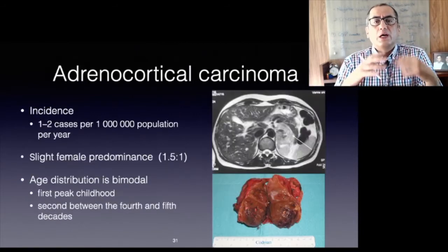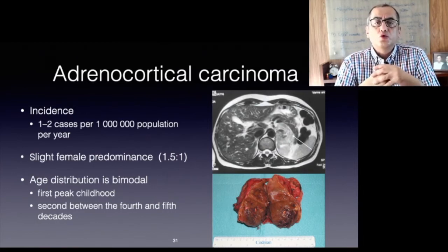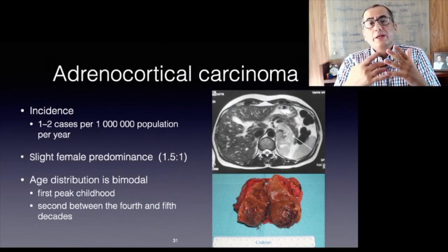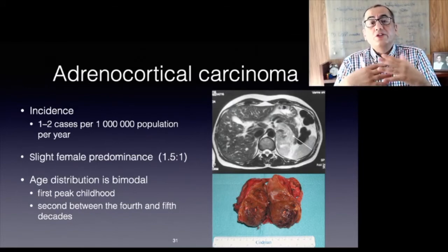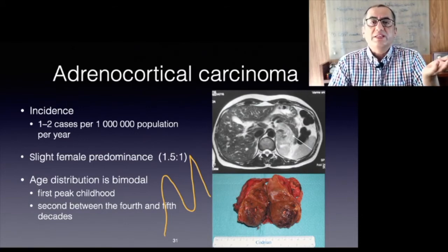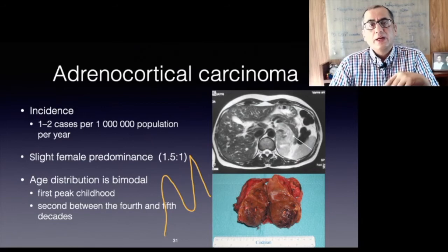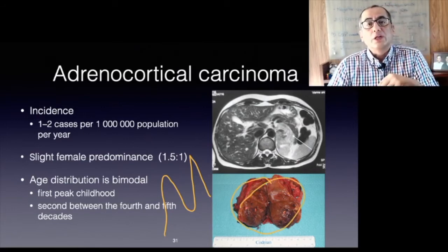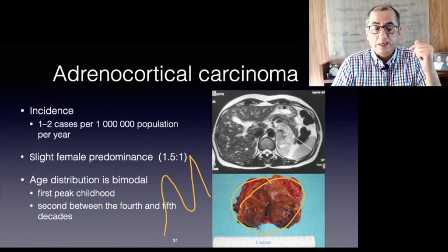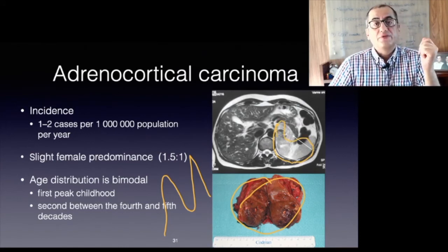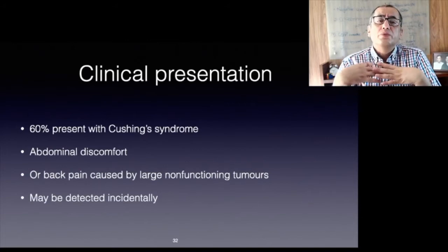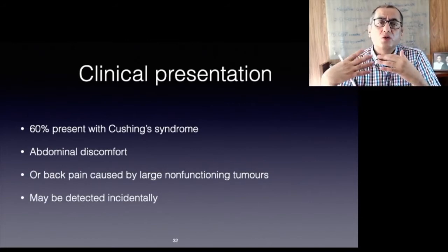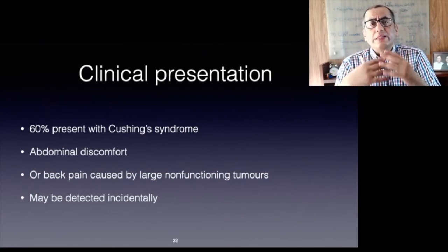Adrenocortical carcinoma is a rare malignancy with an incidence of one to two cases per million population per year and a generally poor prognosis. A slight female predominance of 1.5 to 1 is observed. The age distribution is bimodal — one peak in childhood and a second at the fourth and fifth decades. Approximately 60 percent of patients present with evidence of steroid hormone excess such as Cushing's syndrome. Non-functioning tumors frequently cause abdominal discomfort or back pain, and an increasing number are detected incidentally.